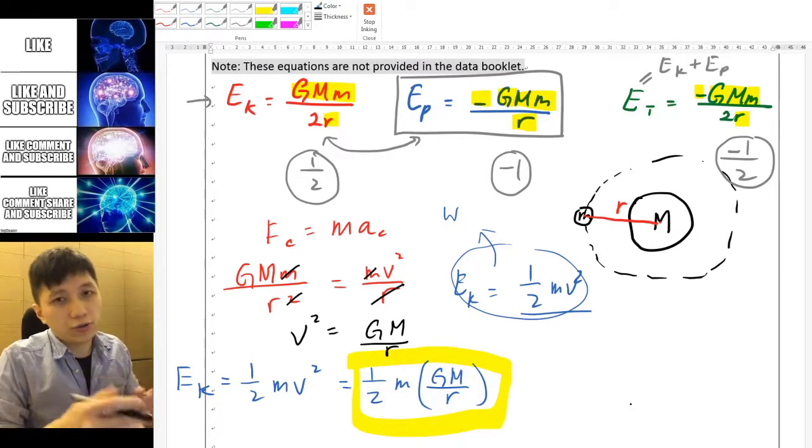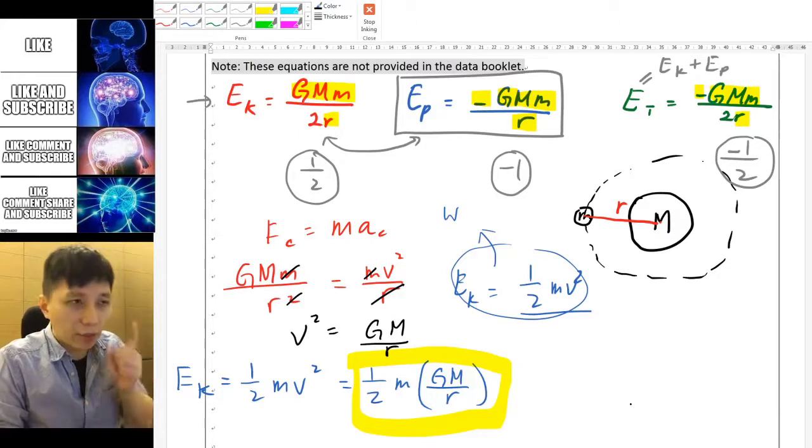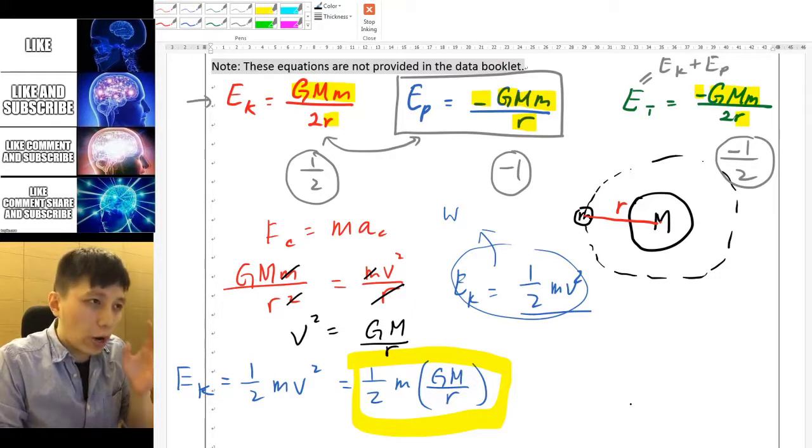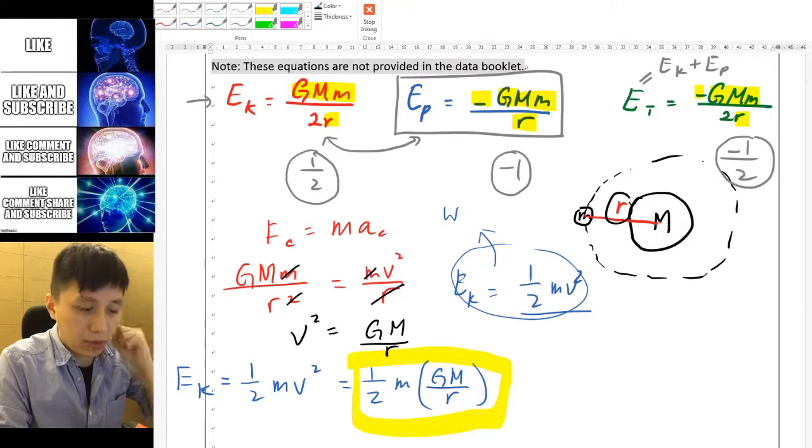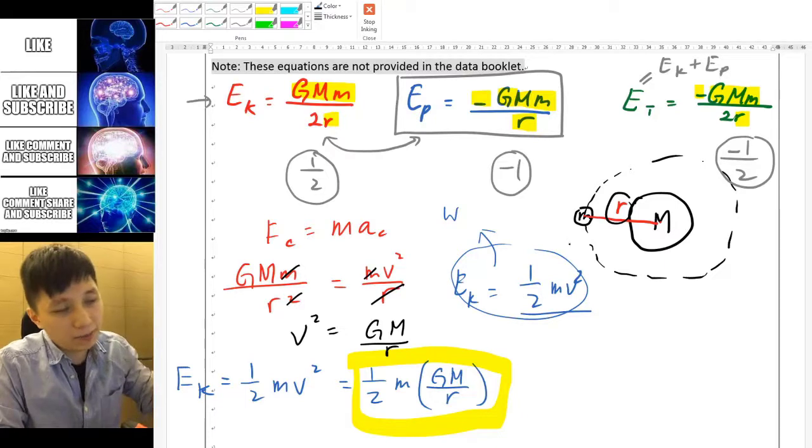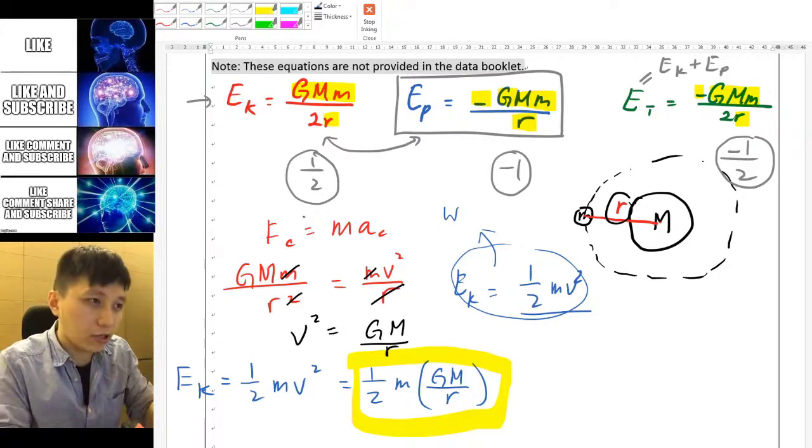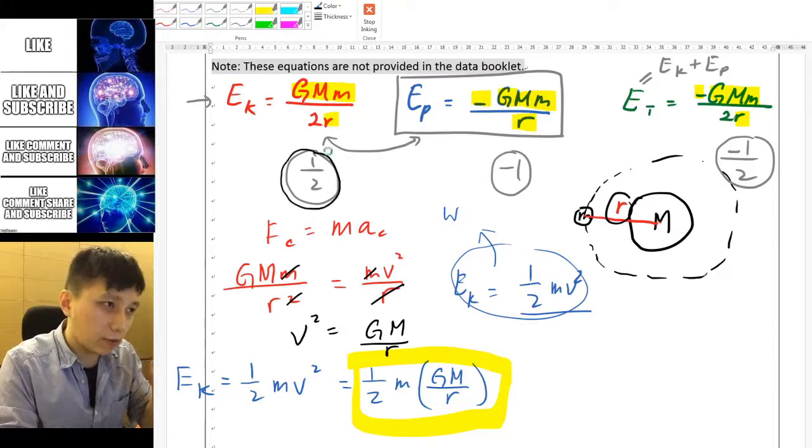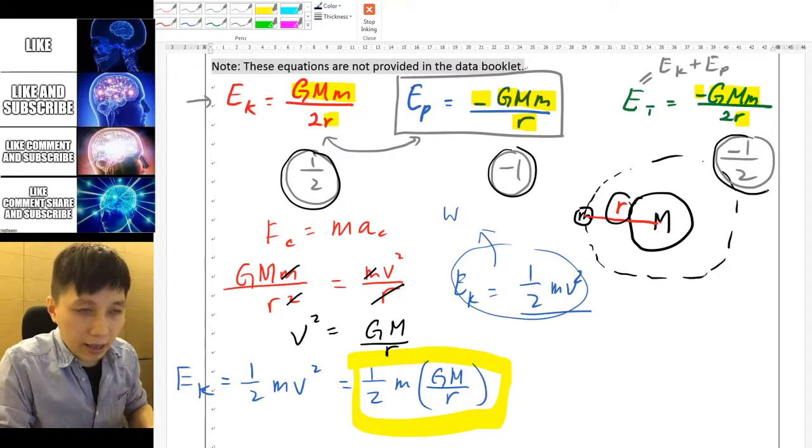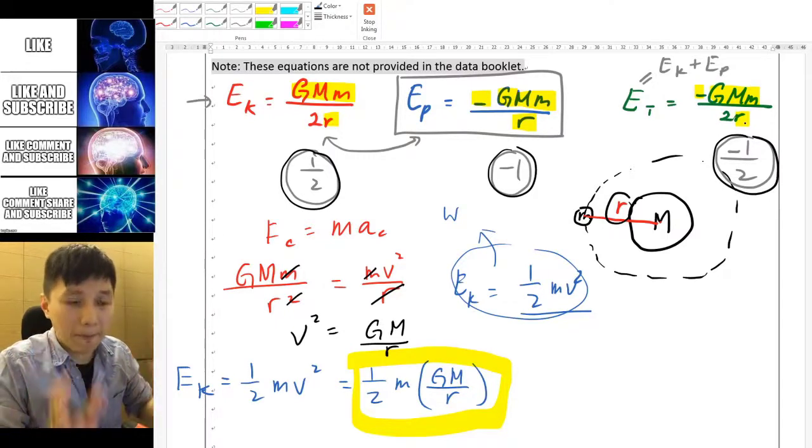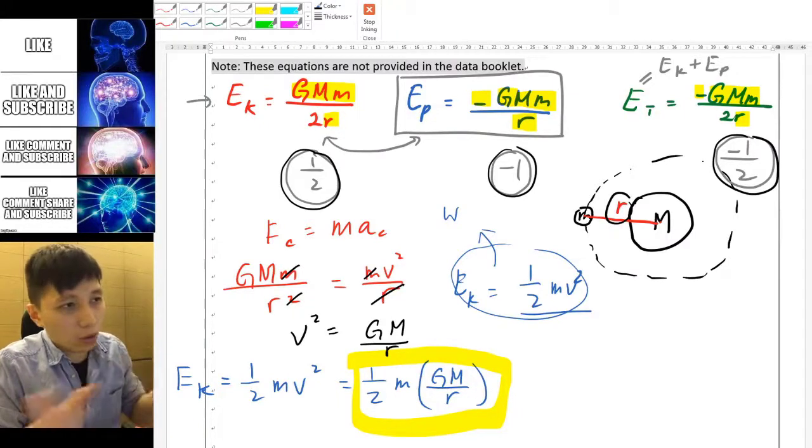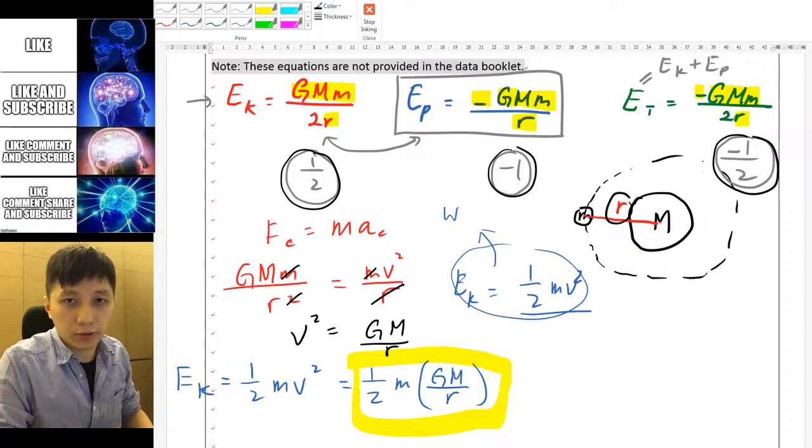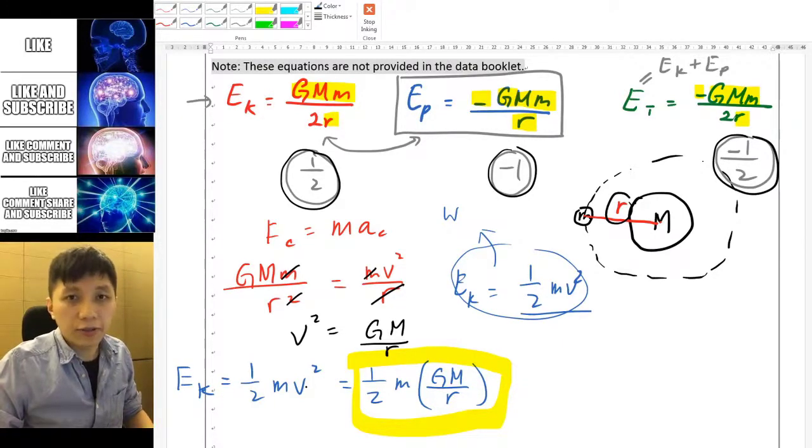So in the next video we'll try to do some exercises. But for now I think one thing you should learn other than just deriving it: no matter where the orbiting object is, no matter what orbital altitude, that means what r you have, the relationship of kinetic, potential, and total energy will have a ratio of this. Once again: one over two, negative one, and negative one over two. The ratio is always maintained the same. If you can remember and understand this then the whole concept wouldn't be hard for you at all. So I'll see you in the next video. Bye.